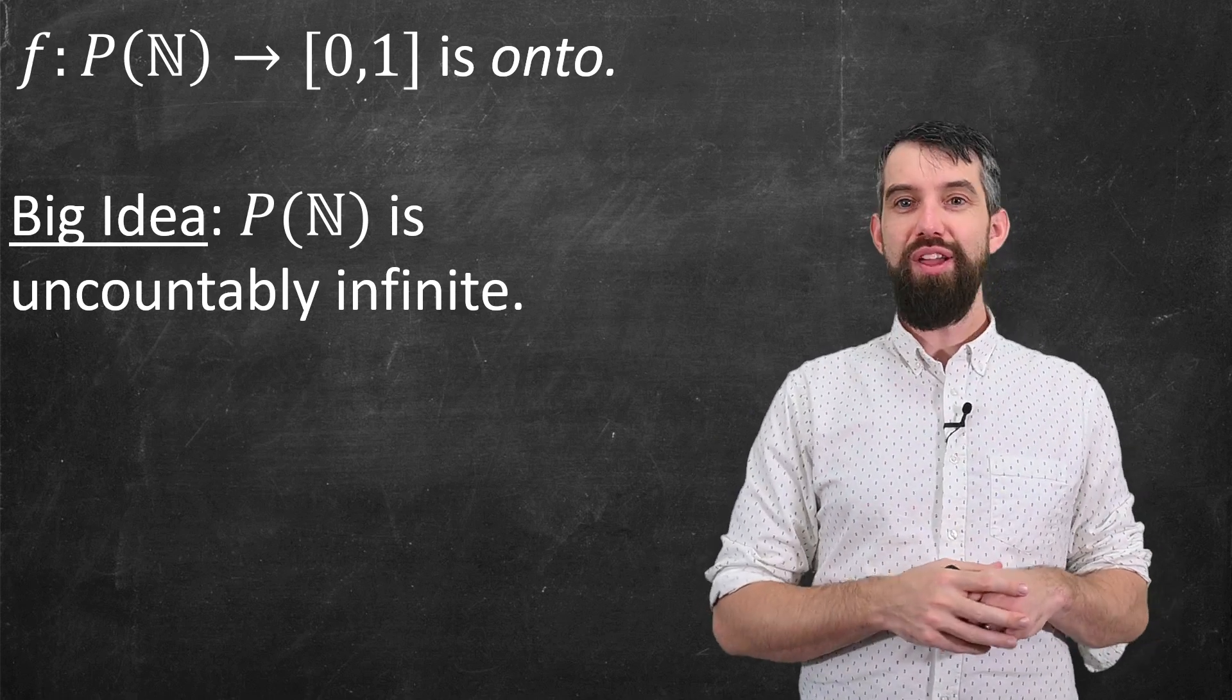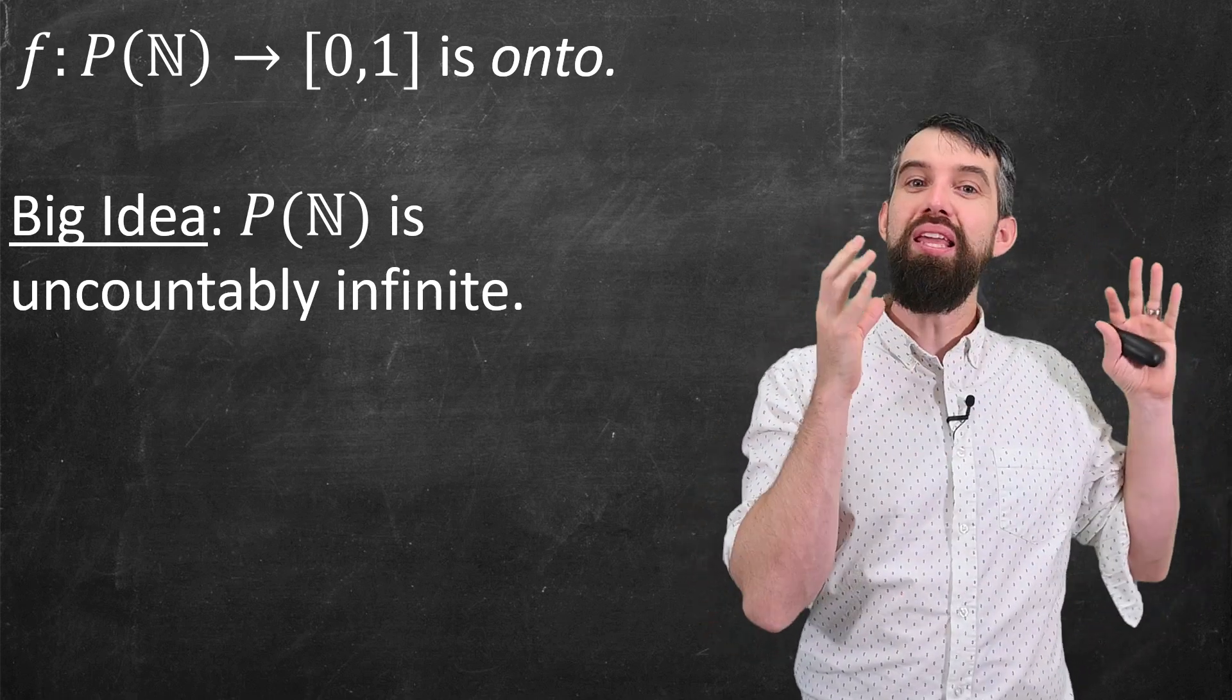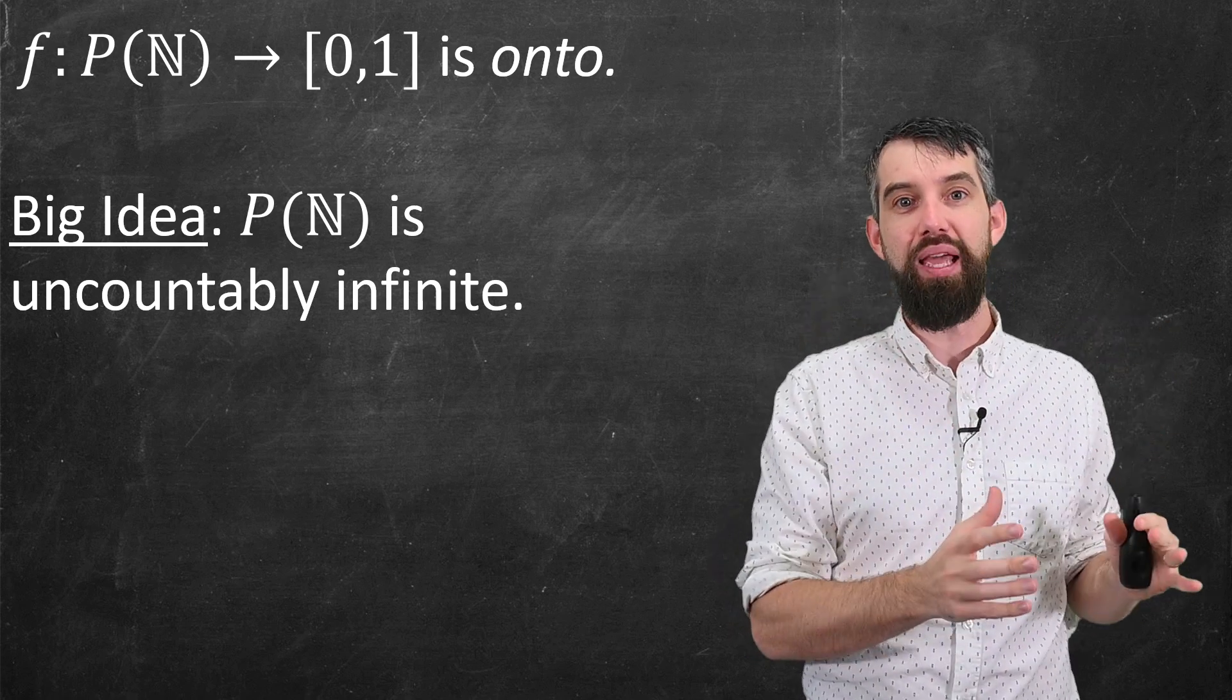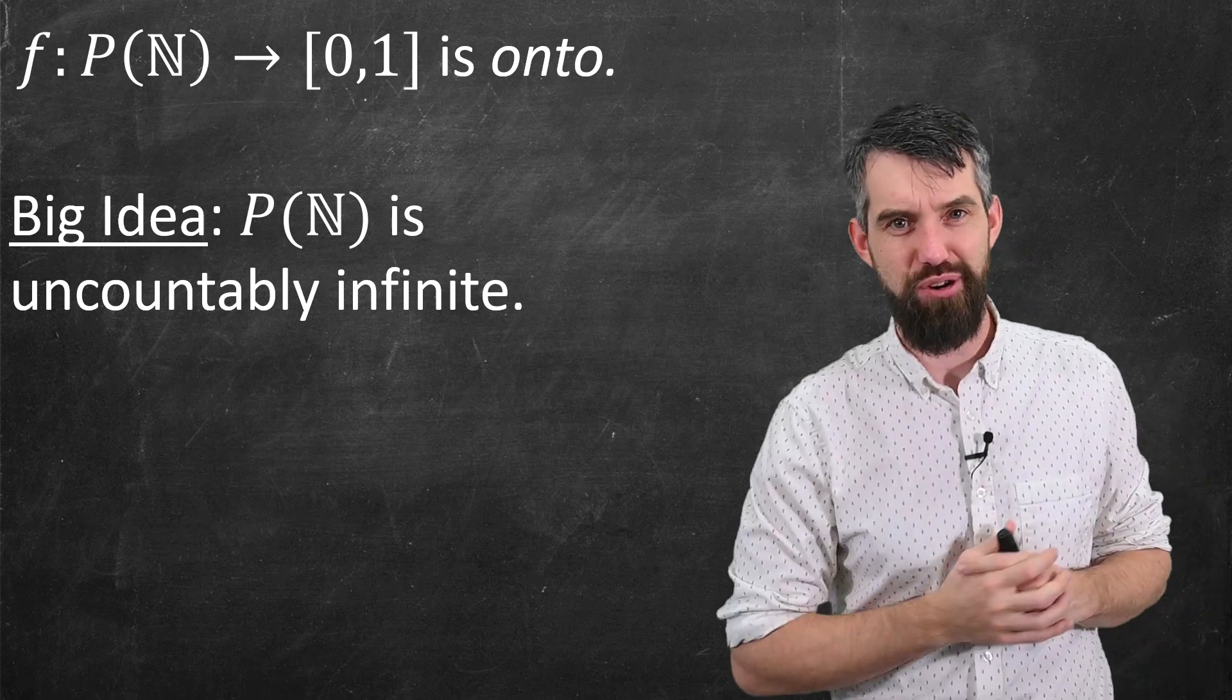Okay, so what do we have? There are at least as many subsets of the natural numbers. The size of the power set of ℕ is at least as big as the number of things in the interval [0, 1].